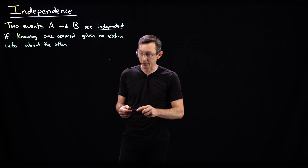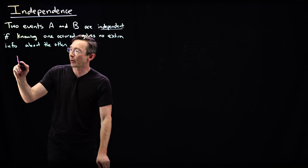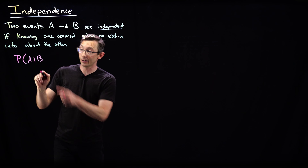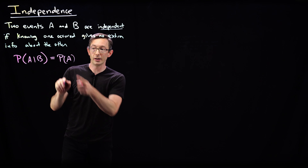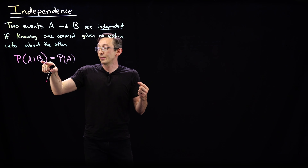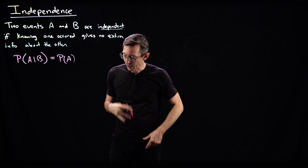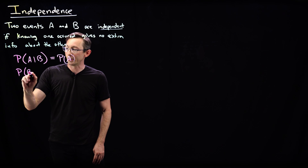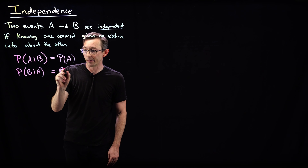The way that we write that down formally or mathematically is really simple. We say that the probability of A, given that we know B happened, is still just the probability of A. We don't update our probability by knowing that B happened. And similarly, the probability of B happening, given that we know information about A, is still just the probability of B.